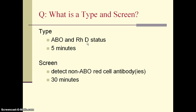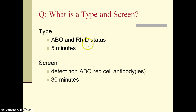RHD antigen status refers to whether your red cells are D antigen positive or negative, also commonly known as RH positive or negative. Altogether, the ABO and RHD status determination takes only five minutes.